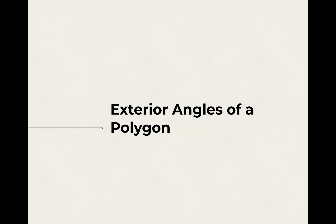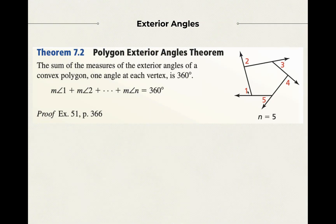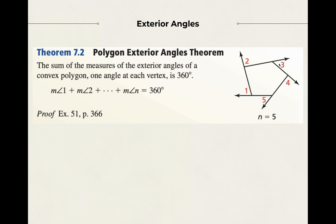Now let's talk about exterior angles. N minus two times 180 gives the sum of interior angles — the angles inside the polygon. An exterior angle, just like with triangles, is formed by extending one side (not both) at each vertex. If you add up all those exterior angles — one exterior angle per vertex — it's always going to be 360 degrees. The way I remember it: you're just going around the outside, like going around a circle, and a circle has 360 degrees.